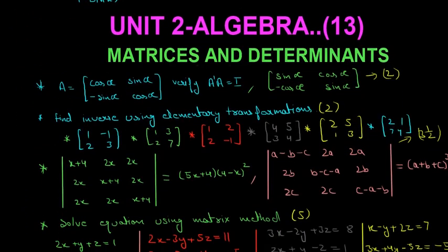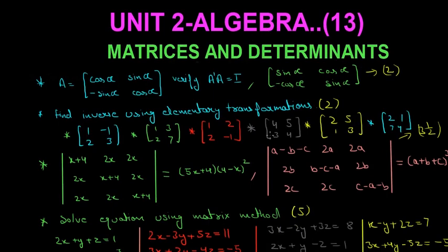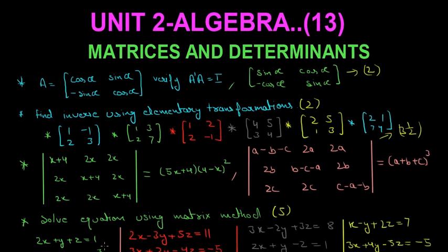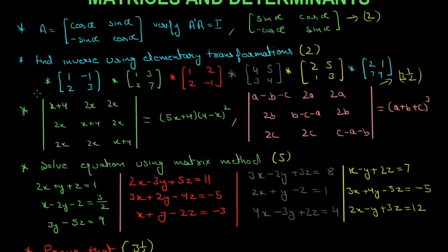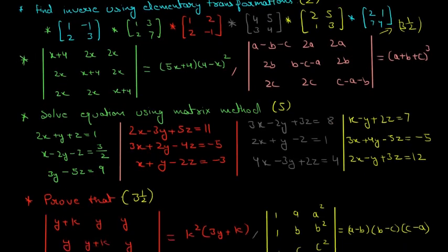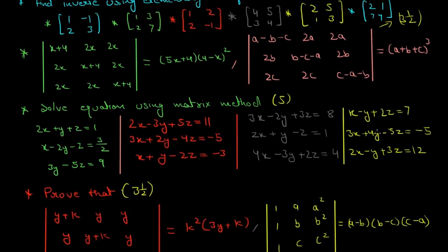Let's move on to the next unit, which is Algebra. This unit has 13 marks weightage. The chapters of this unit are Matrices and Determinants. In Matrices and Determinants, these are the questions which came again and again in all those board exams — pause the video and note down these questions. These are one-mark questions, this is a two-mark question, they ask you to find inverses of questions like these, and they also ask you to prove these determinants. Matrix method questions are five-mark questions and are really important.